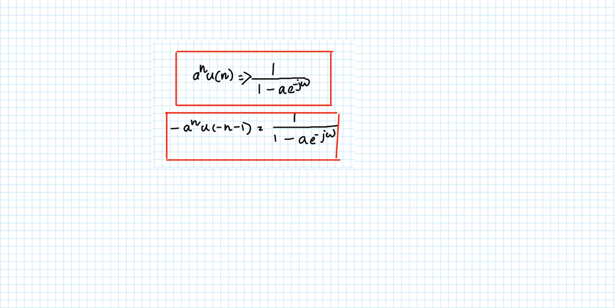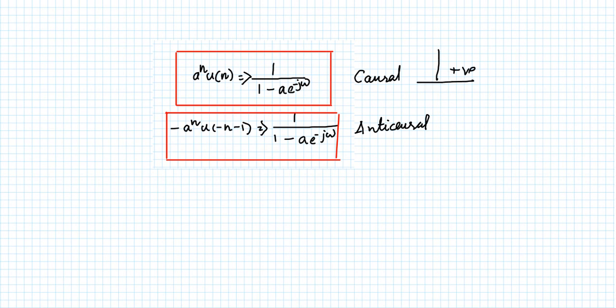So to summarize: the causal signal a raised to n times u of n exists only for positive values of n, and the anti-causal signal minus a raised to n times u of minus n minus 1 exists only for negative values of n. If the signal is causal, the DTFT is 1 by (1 minus a e raised to minus j omega), and this same result holds for the anti-causal signal. This is the key difference between causal and anti-causal signals in the context of DTFT computation.